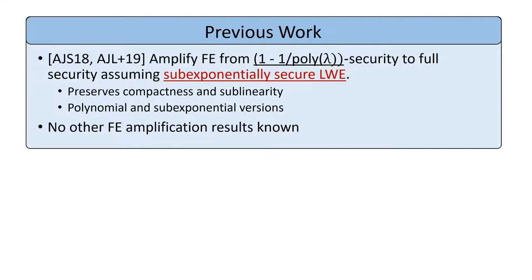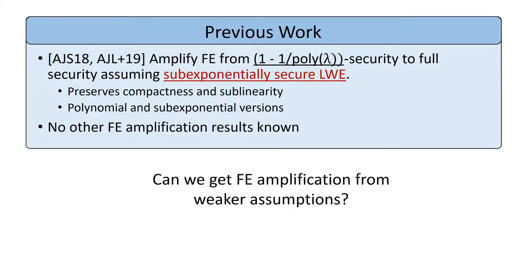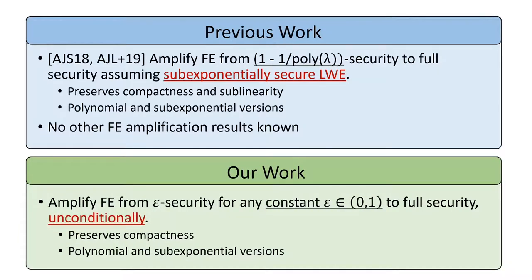Since prior work assumes sub-exponentially secure LWE, this raises the question of whether we can get FE amplification from weaker assumptions. As the title of this talk indicates, the answer is yes. In our work, we show that you can amplify FE from constant security to full security unconditionally. Our transformation also preserves compactness and, as in the prior version, has both polynomial and sub-exponential versions. We note that the prior work allows amplification from slightly weaker FE, whereas our work requires that the weak FE be at least constantly secure. However, our transformation has the advantage of being unconditional.